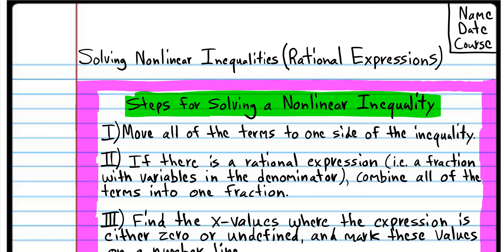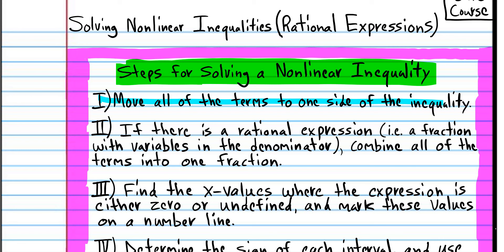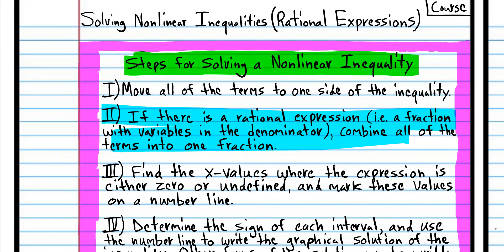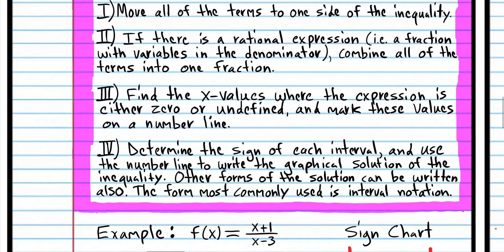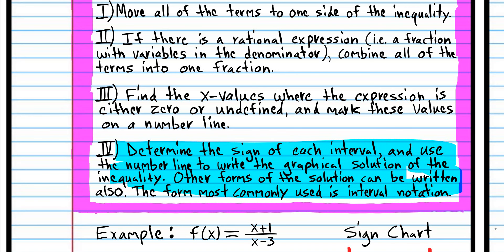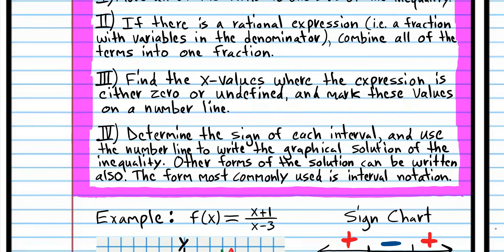In the previous class we started by moving all the terms to one side of the inequality. We're going to do that today, but we're going to use a second step: we're going to add all of the expressions together and combine them to one fraction, and we're going to find the x values that make the expression zero, as we did in the previous class, but we're also going to find the x values that make the expression undefined because we're dealing with fractions.